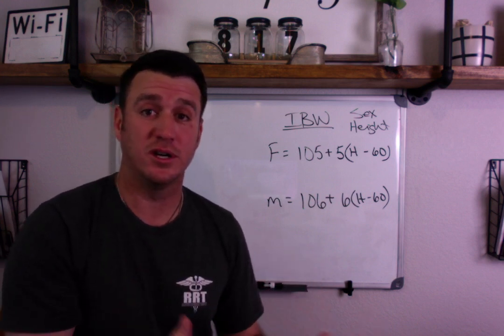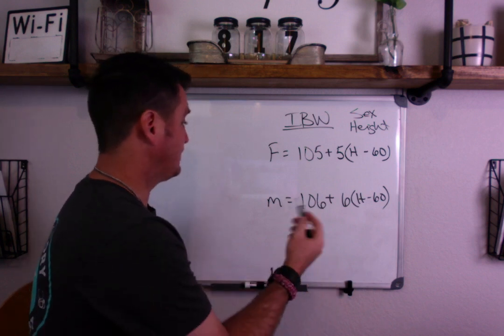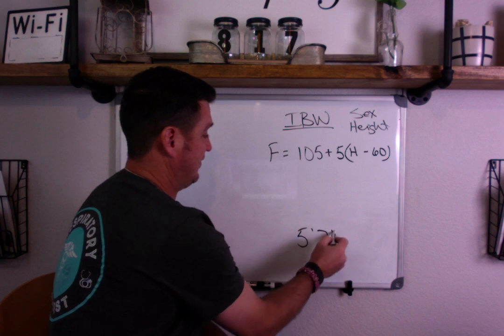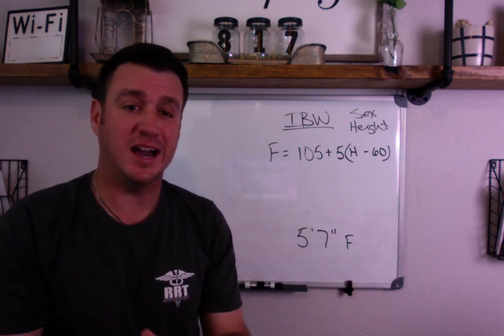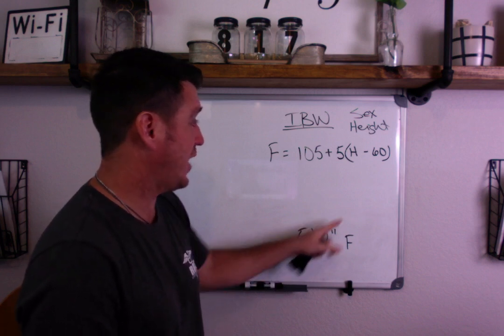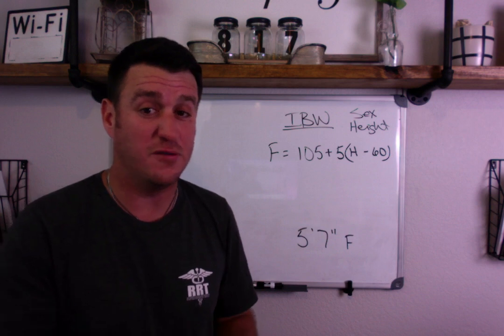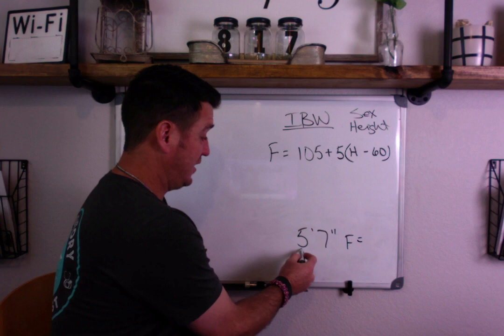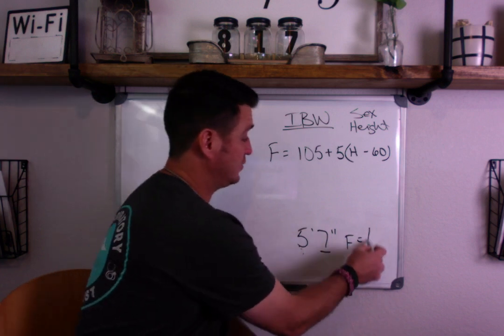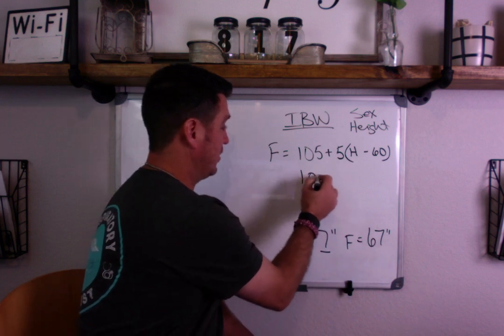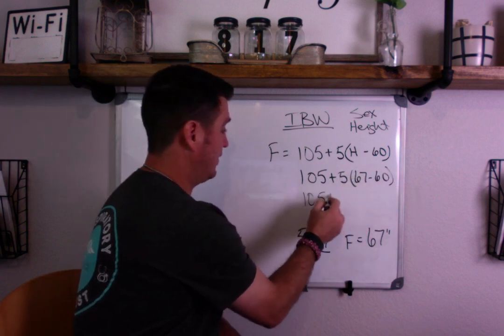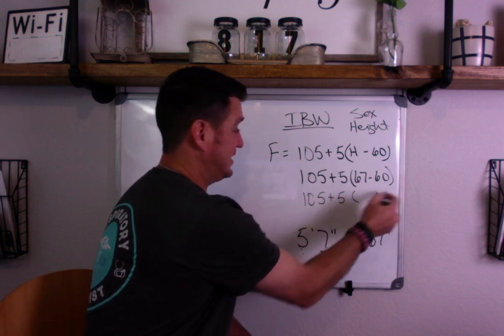So those are your formulas for ideal body weight. Now to calculate that, you have to know how tall your patient is. So let's say we have a five foot seven inch female. Then the first thing you got to do is turn this into inches. So five feet times 12, 12 inches in a foot. So five times 12 is 60. And an additional seven inches equals 67 inches. So we're going to take that number and put it up here. So 67 minus 60, this brings us to 105 plus 5 times 67 minus 60 is 7.